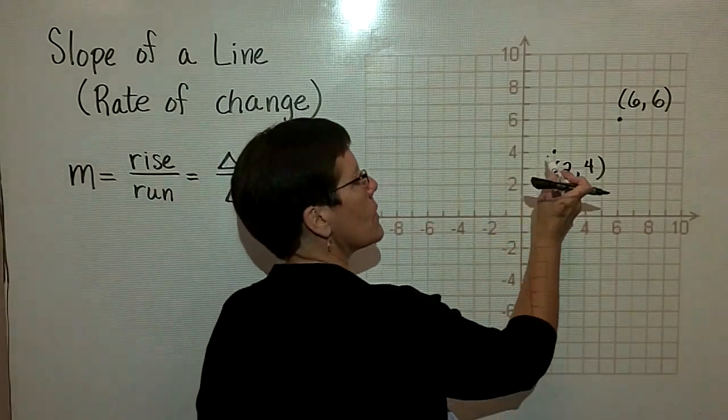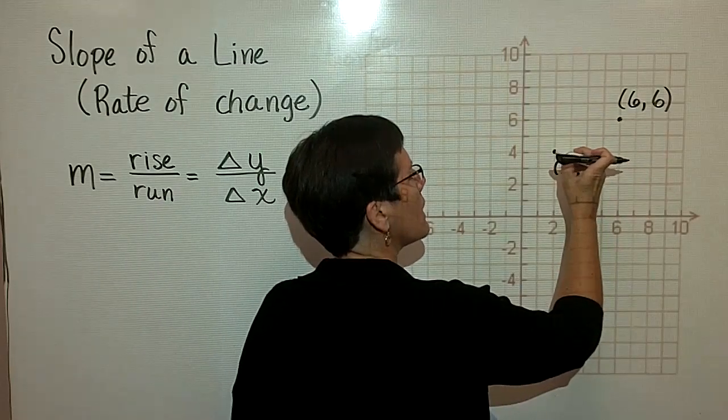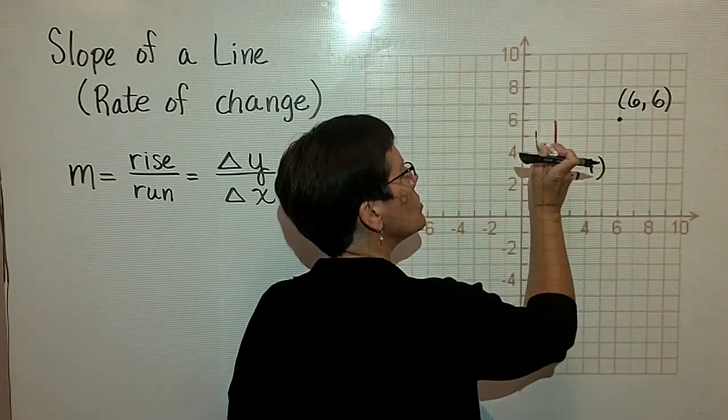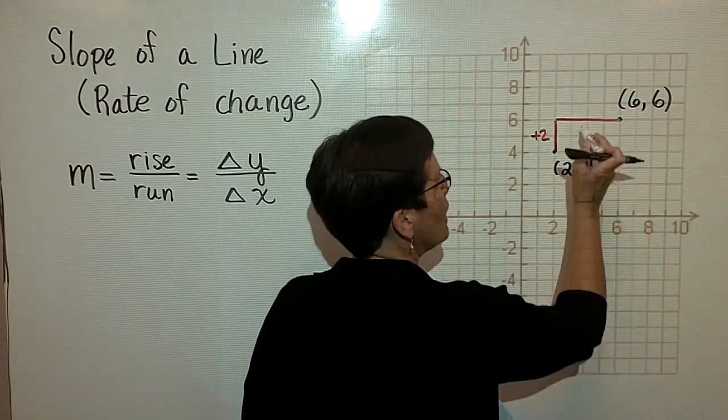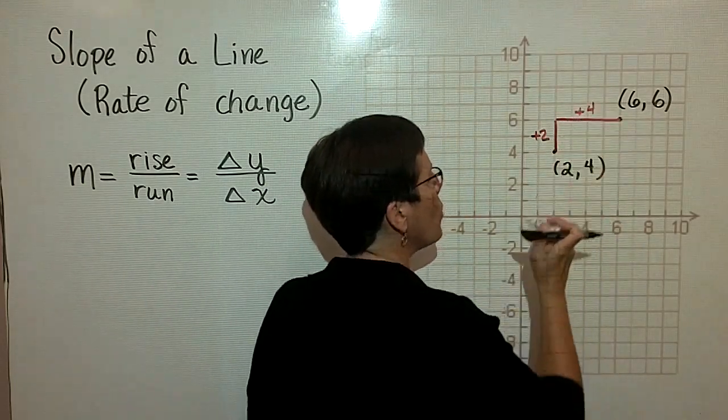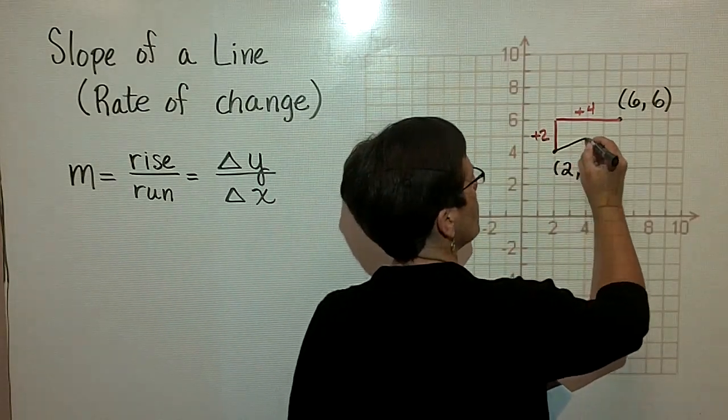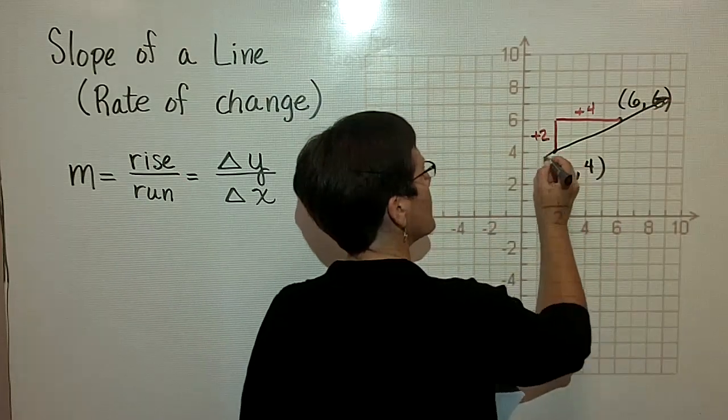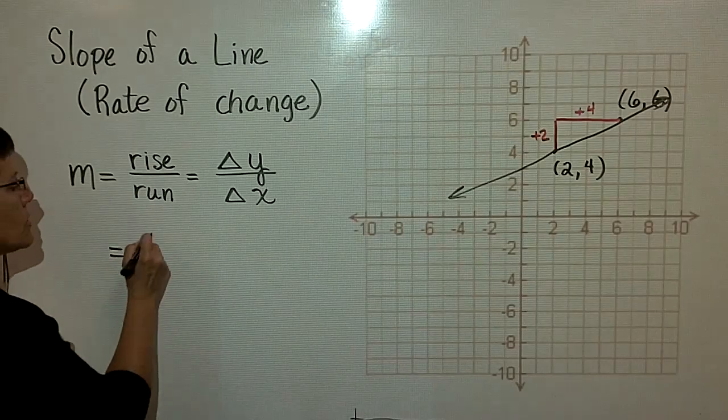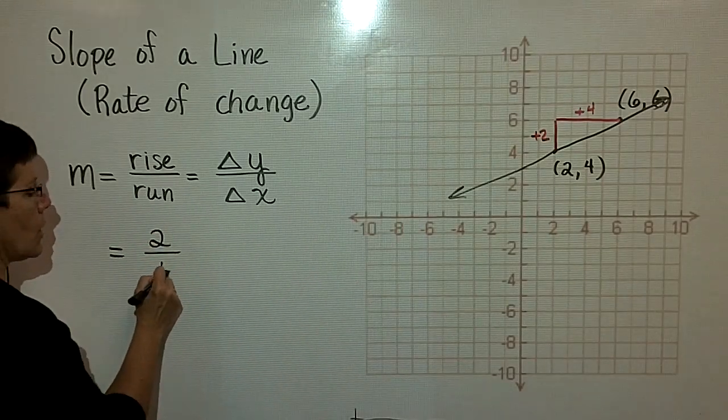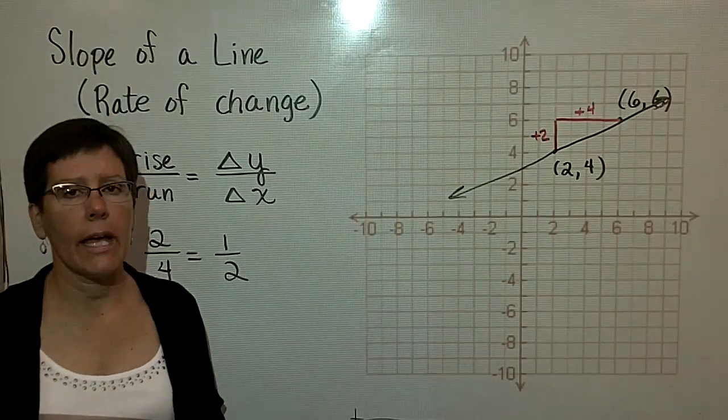So if I start with this ordered pair to get from this point to this point, it looks like I have to rise two points and run horizontally a distance of a positive 4. So it looks like the slope of this line, which here's the actual line that I'm looking at, its rise is 2 when its run is 4, or this particular line has a slope of 1 half.